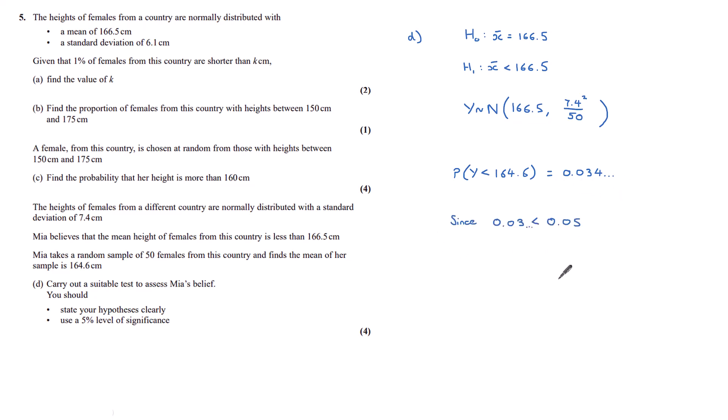Since this 0.034 is less than 0.05, which is a 5% significance, there is evidence to reject H0. And so Mia's belief is supported that the mean is actually less than 166.5.